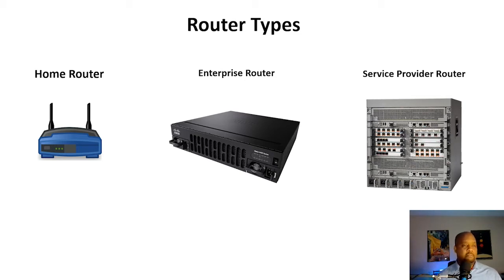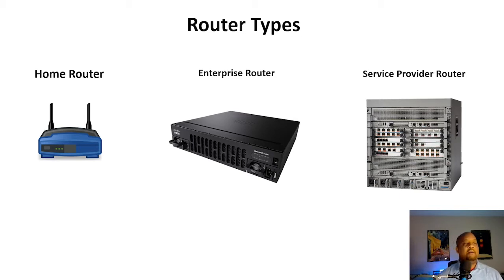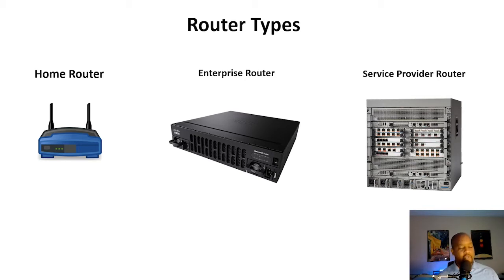Next up is the enterprise router — this is a Cisco 4400 series ISR (Integrated Services Router). This sits on the WAN of an enterprise and handles more traffic. You can run different routing protocols on it, and it has many more layer three features than a home router. The home router is limited in function, generally just providing internet access, while the enterprise router does a lot more.